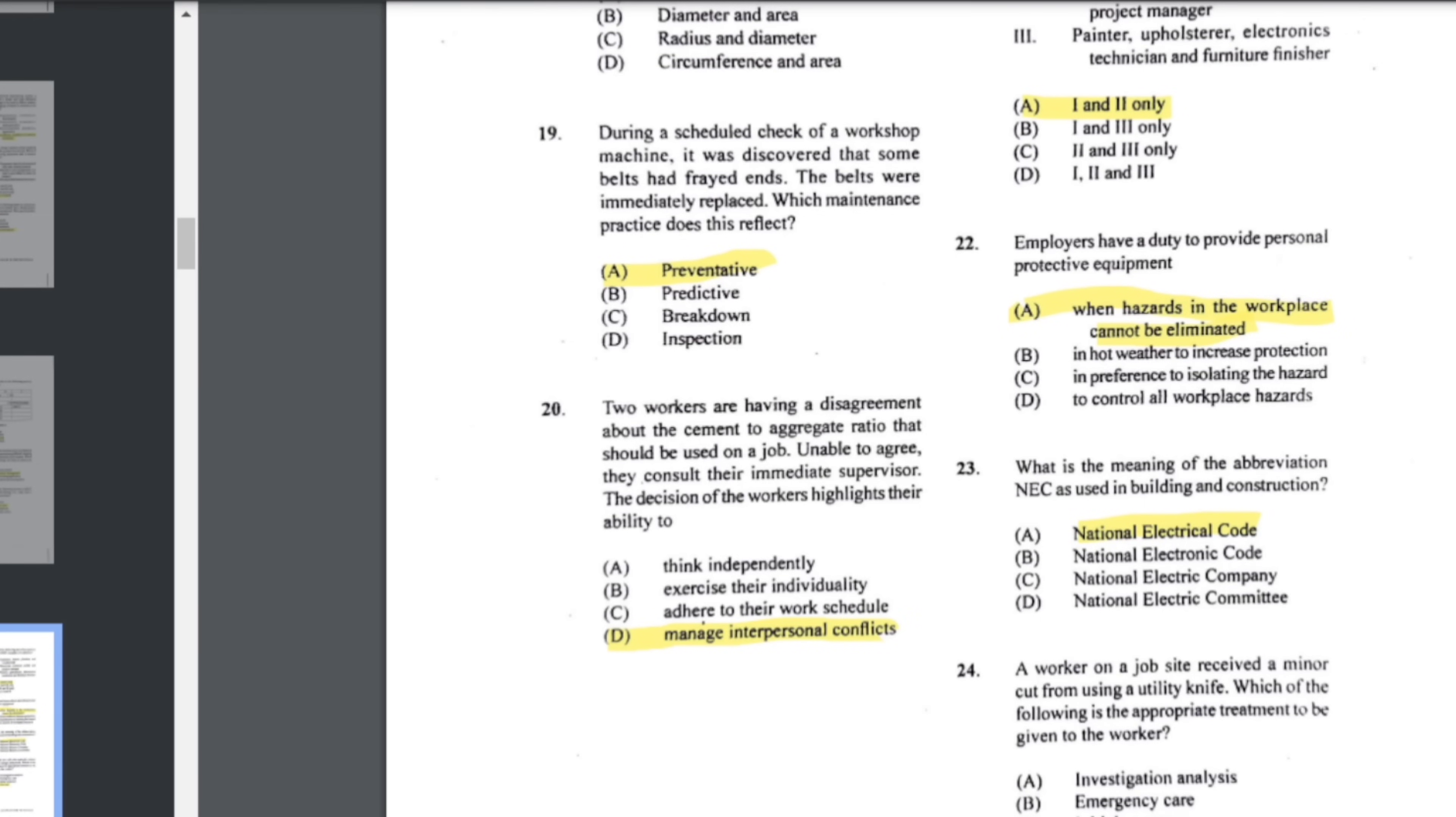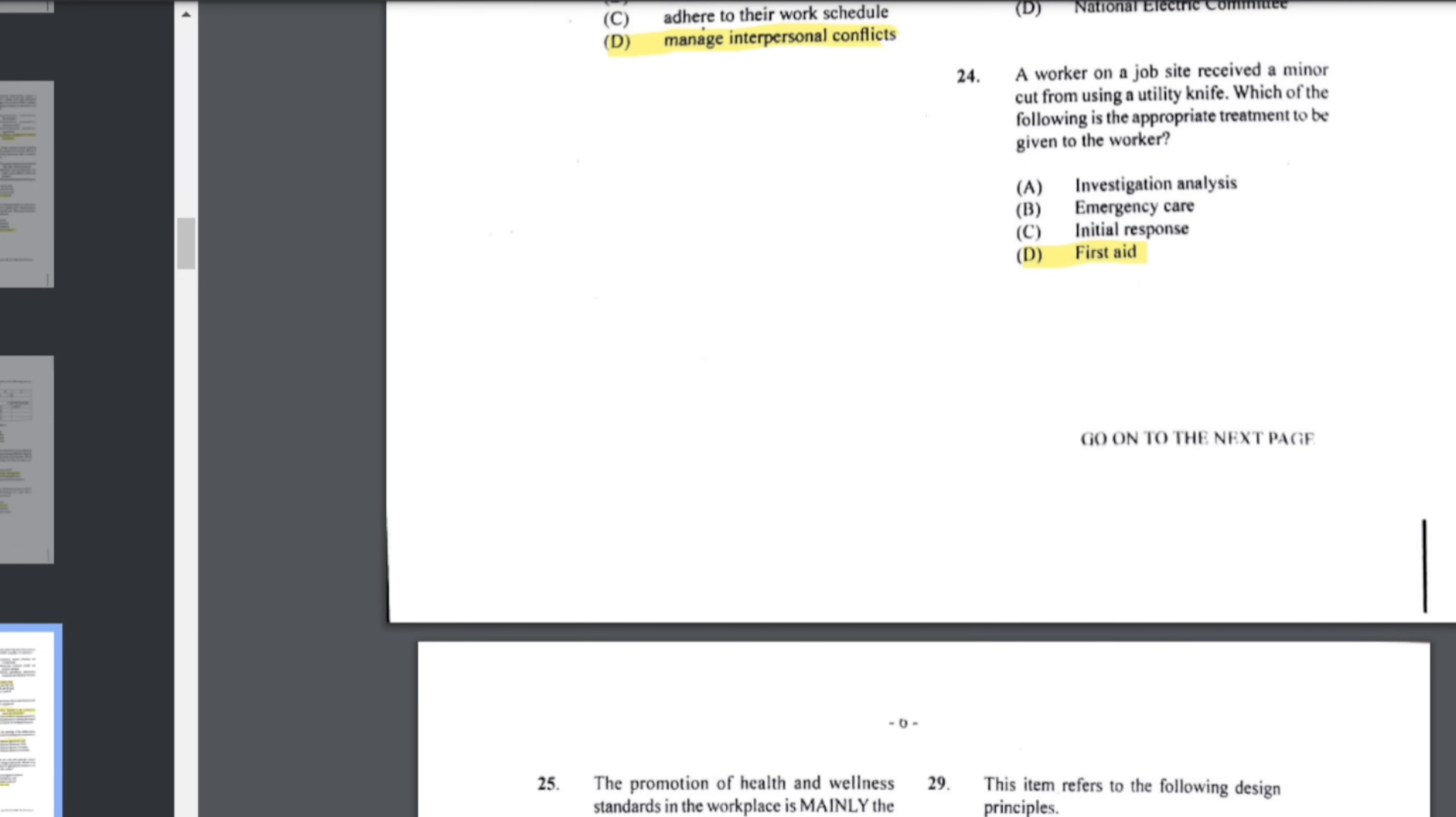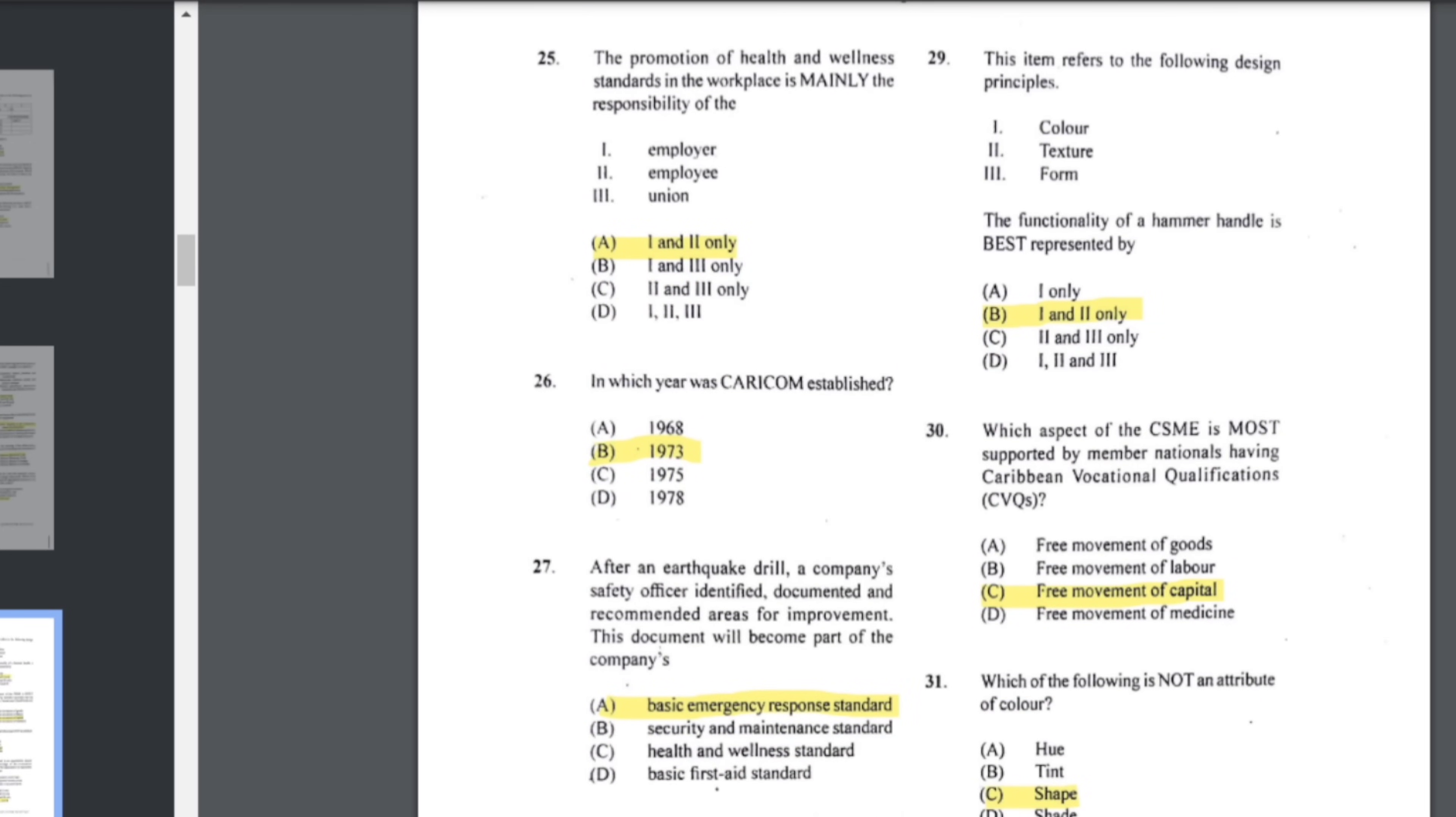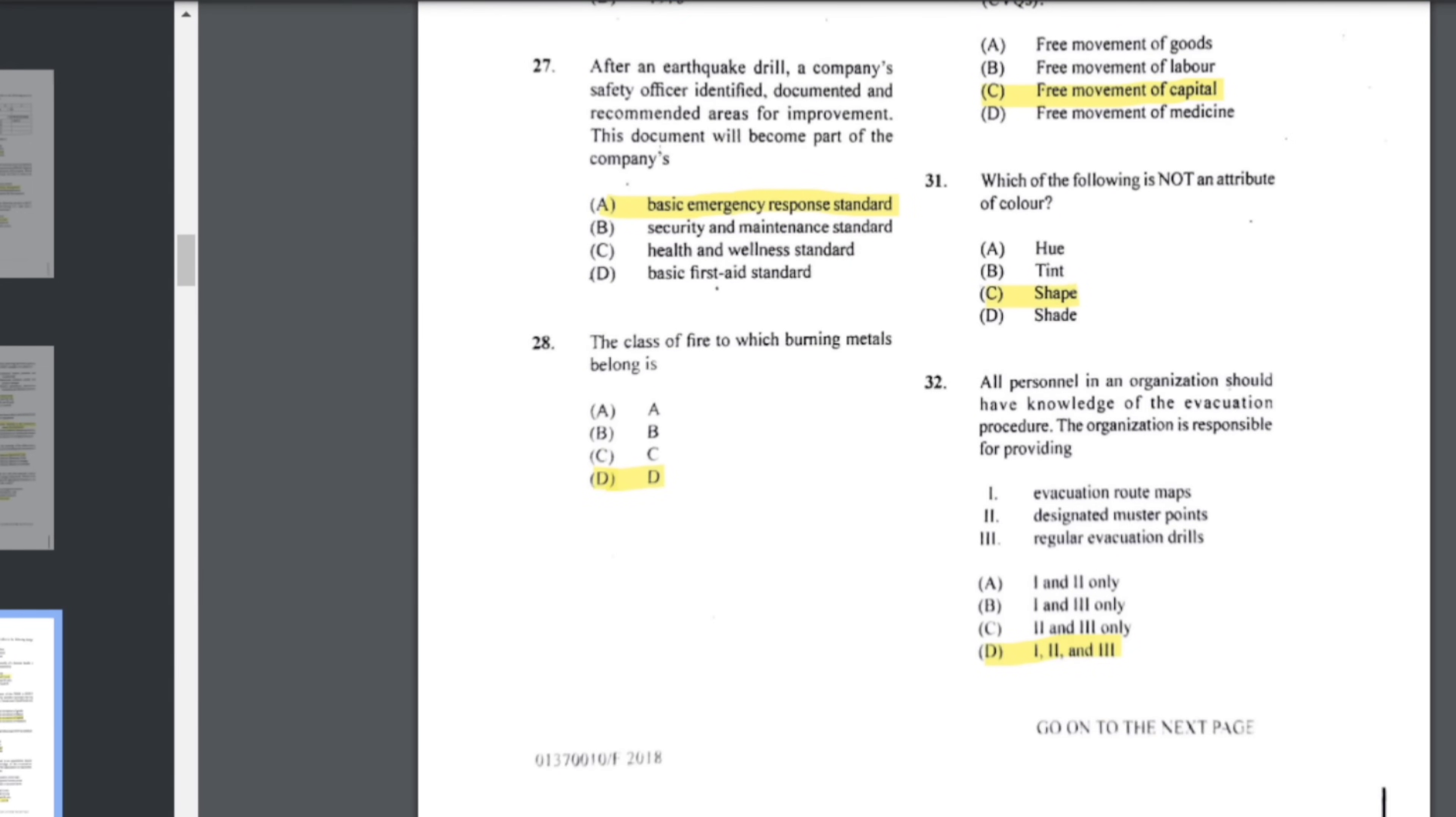Number 22: employers have a duty to provide personal protective equipment when hazards in the workplace cannot be eliminated. Number 23: what is the meaning of the abbreviation NEC? National Electric Code. Number 24: a worker on a job site received a minor cut from using a utility knife. Which of the following is the appropriate treatment to be given to the worker? In this case it would be first aid. Number 25: the promotion of health and wellness standards in the workplace is mainly the responsibility of the employer and the employee. Number 26: in which year was CARICOM established? That's 1973.